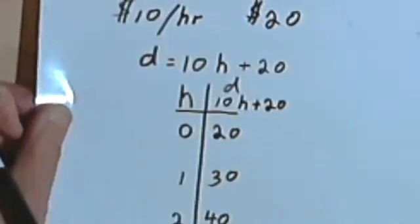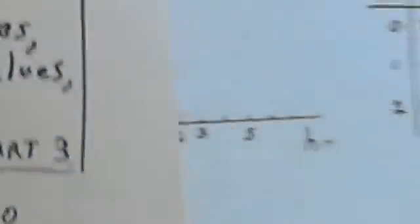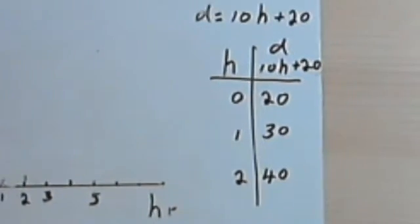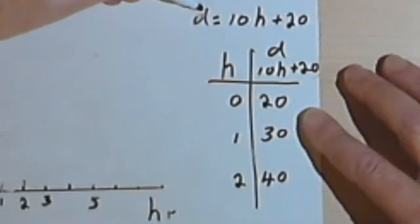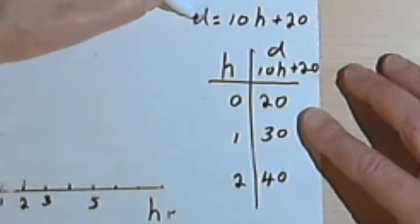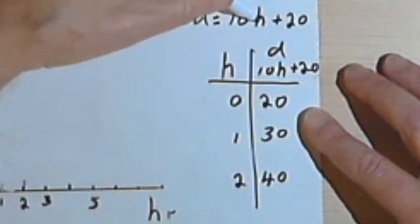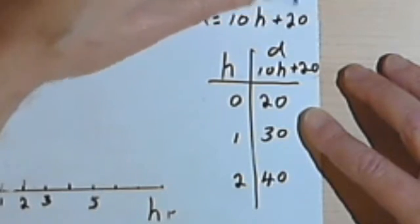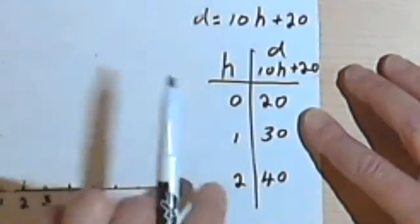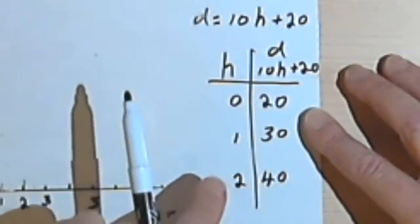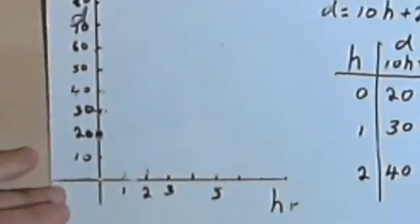So let's take it now and put it into a graph. Here I've got the original equation that I started with, d for dollars, equals 10h, h for hours, plus 20. Here I've got the table of values that we made, and here I've got a graph.